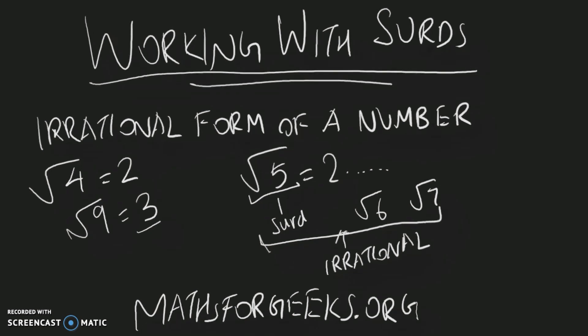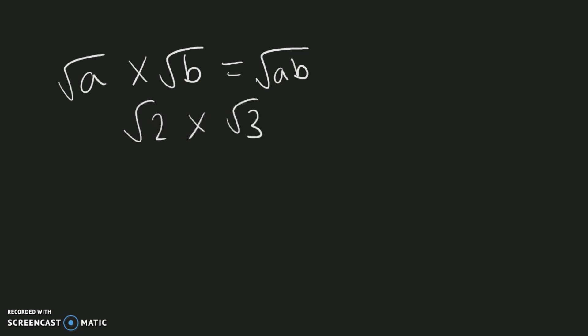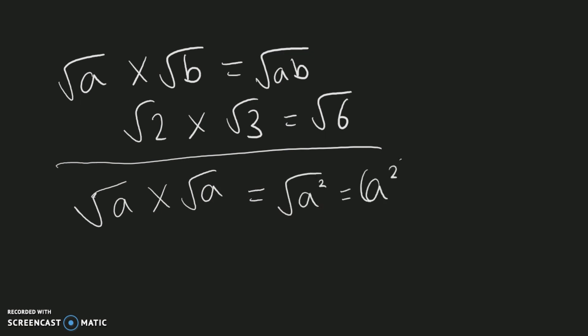Let's look at some important rules to remember when working with surds. The first rule: a surd with value inside being 'a' multiplied by a surd with value inside being 'b' is equal to the square root of ab. This means the square root of two multiplied by the square root of three equals the square root of six — the values inside are simply multiplied. Also, the square root of 'a' multiplied by the square root of 'a' equals the square root of a², and a² to the power of one-half simplifies to 'a', because two 'a's make a square.